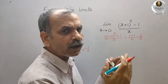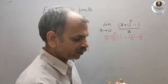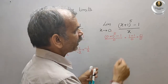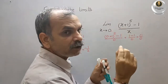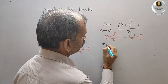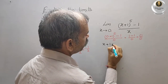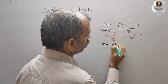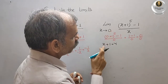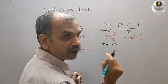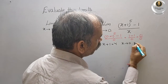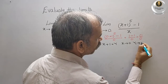Since we get 0 by 0, our answer should not remain in that form, so we have to go for another approach. We substitute x plus 1 equal to y. Since x tends to 0, that means y tends to 1. So x tends to 0 corresponds to y tends to 1.